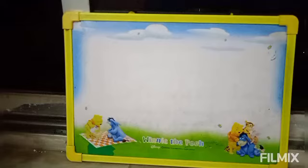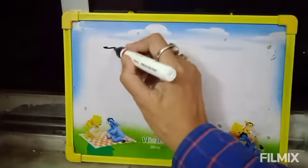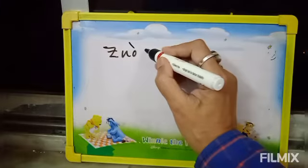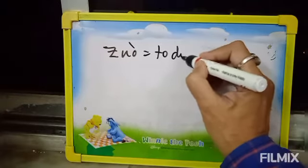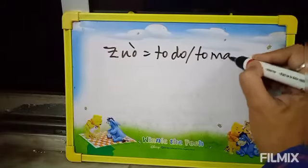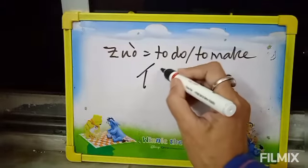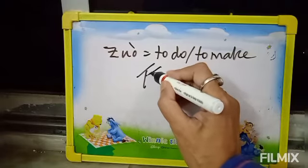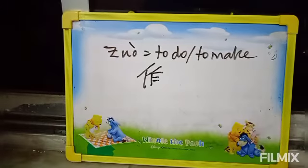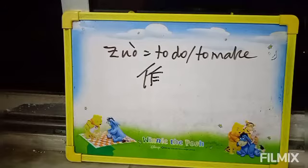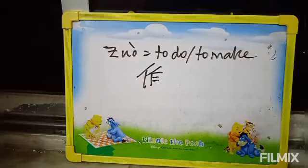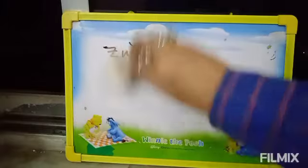In today's class I am showing you 8 new Chinese Mandarin characters. My first character is Zuo. Zuo means to do or to make. Now I am showing you how to draw this character. This is the character Zuo.